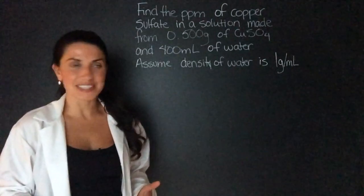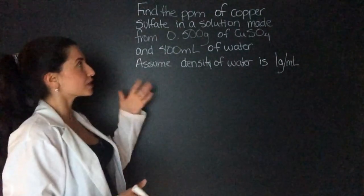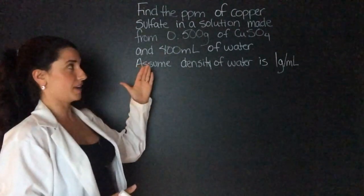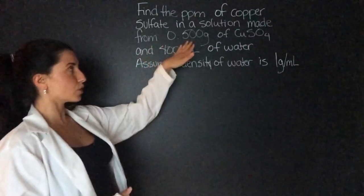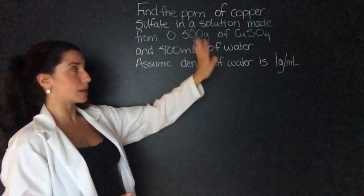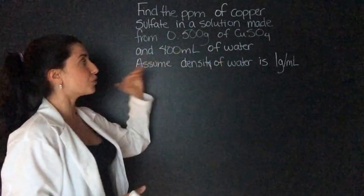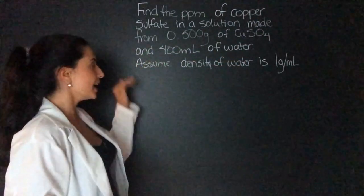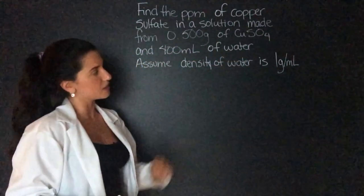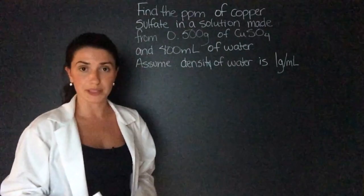My example for this lesson is find the parts per million of copper sulfate in a solution made from 0.500 grams of copper sulfate and 400 milliliters of water. Assume the density of water is one gram per milliliter.